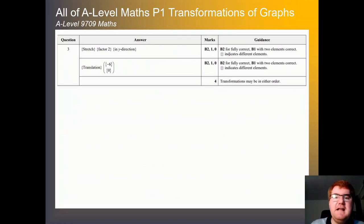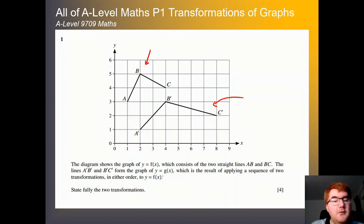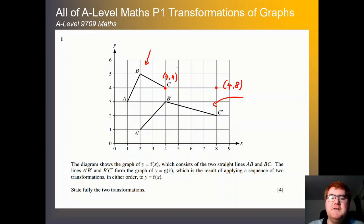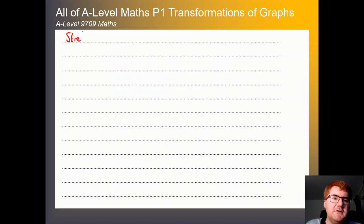You can see the answers here and how we pick up all four marks for that question. On to question one. We've got a diagram showing f of x which has been transformed to another function. This is the result of applying a sequence of two transformations in either order to y equals f of x. Taking coordinate c at (4, 4), we want to get it to (4, 8). We multiply the y coordinate by 2. So our first transformation is a stretch in the x direction, factor 2.